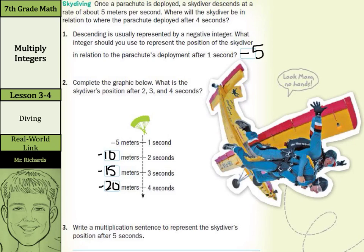Write a multiplication sentence to represent the skydiver's position after 5 seconds. Before we do that, notice we had 2 times negative 5 to get to negative 10. We had 3 times negative 5 to get to negative 15, and we had 4 times negative 5 to get us to negative 20.